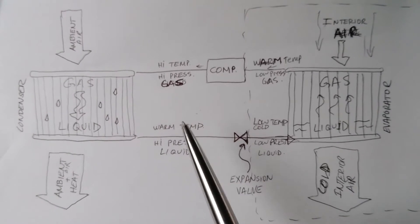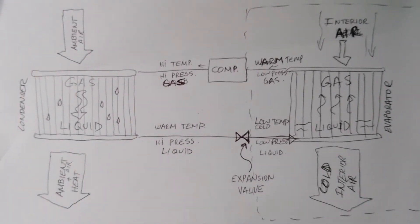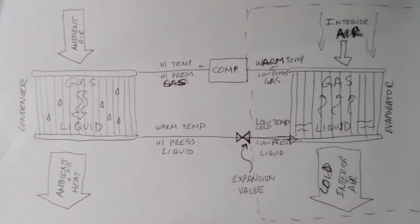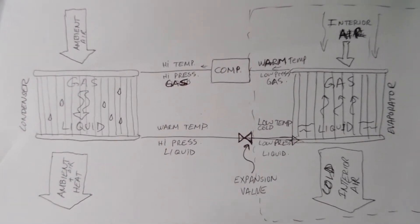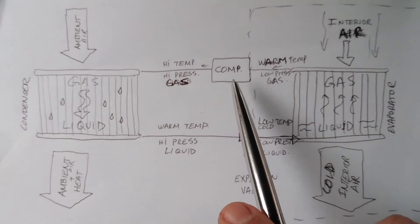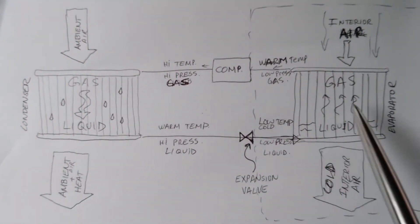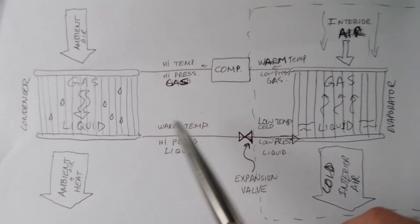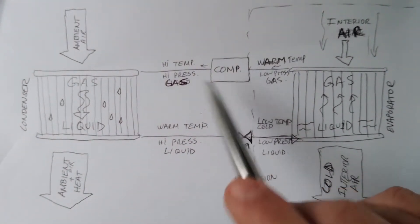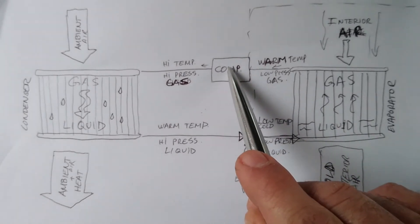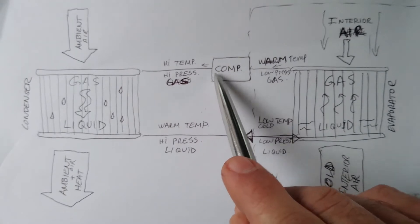This system is what cars, buses, trucks, small piston aircraft, houses, and window units all use — it's a closed loop system. I've drawn here a simplified schematic diagram of how the system works to make it easier to explain. We'll start with the compressor and follow the path of the gas all the way around.